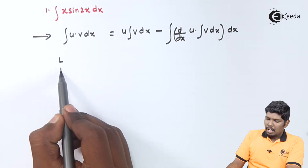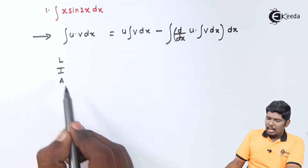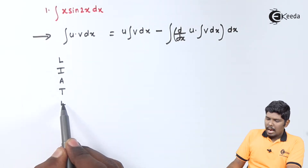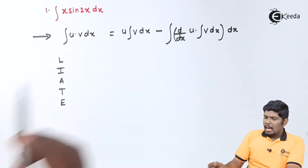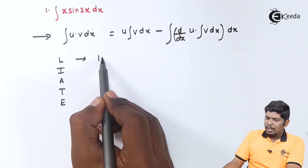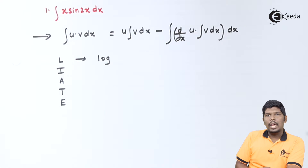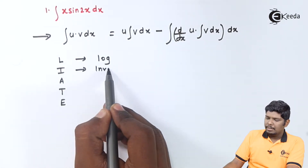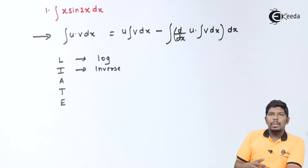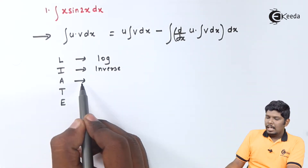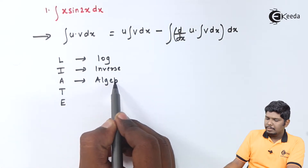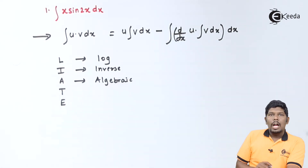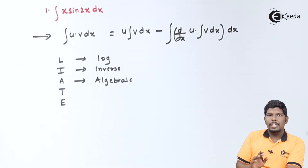L, I, A, E and E. L stands for logarithmic functions — the function in which we have log. I stands for inverse functions, like sine inverse, cos inverse, tan inverse and so on. A stands for algebraic functions — meaning the function in which we don't have sine, cos, log, or anything like that.